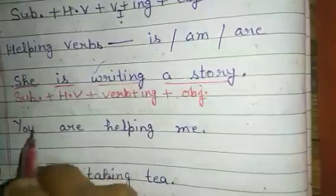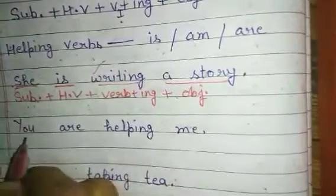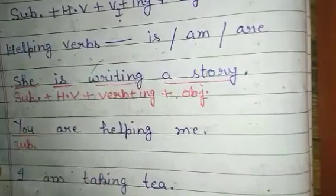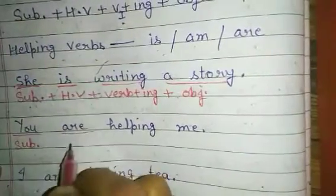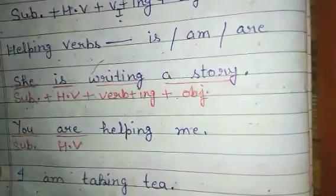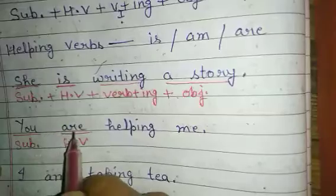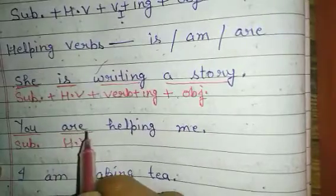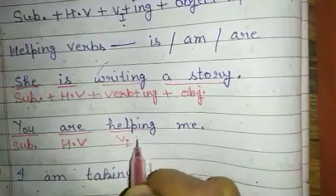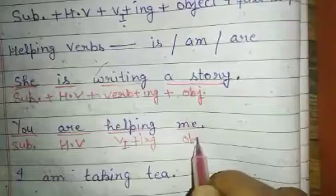The second example is: 'You are helping me.' In this sentence, 'you' is the subject. The helping verb is 'are,' because with the subject 'you' we use 'are,' not 'is' or 'am.' 'Helping' is the first form of verb plus -ing, and 'me' is the object.